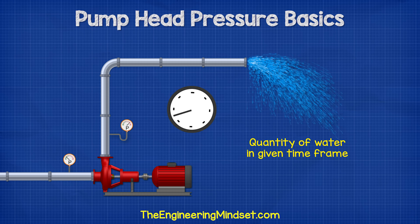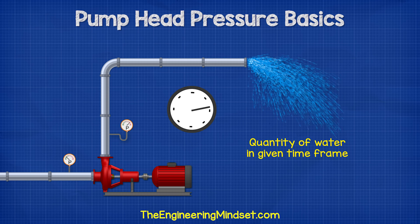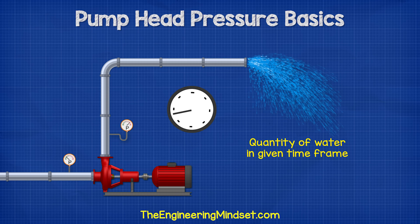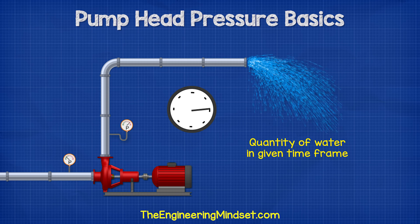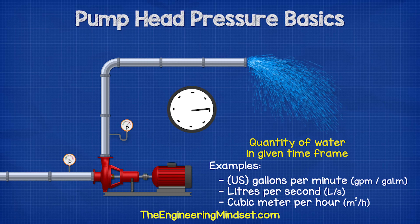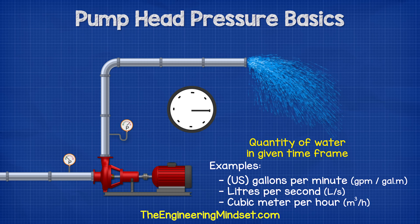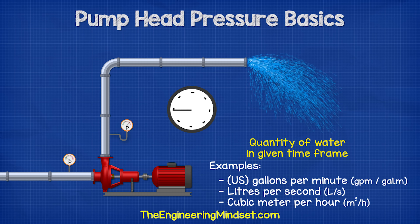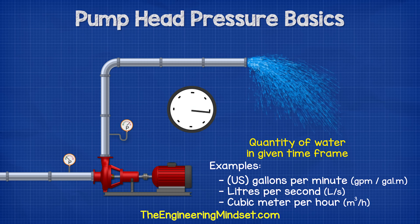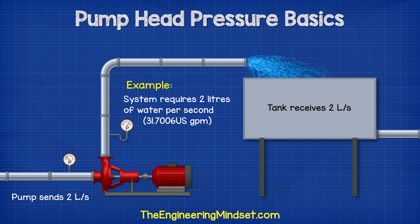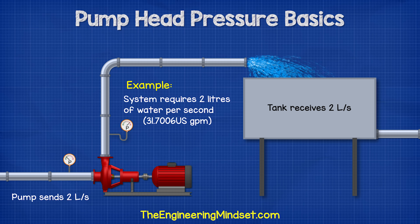The flow rate is a measurement of how much liquid is flowing from the pump in a given amount of time. This measurement comes in many different units, for example gallons per minute, liters per second, or cubic meters per hour. For example, a system might be designed to move two liters of water per second from a holding tank to a process tank.